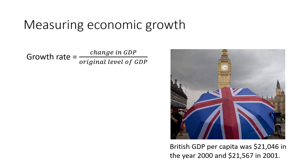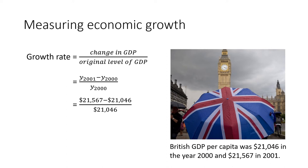Besides measuring income, we'd like to measure economic growth. The growth rate is always just the change in GDP divided by the original level of GDP. For example, if you want to know the growth rate in the year 2000 in terms of British GDP per capita, you take GDP per capita in 2001, subtract what it was in 2000, and divide by the original level in 2000. In this case it would be 21,567 minus 21,046, divided by 21,046, which gives 0.024755 — equal to about 2.5%. To go from a decimal to a percent, you move the decimal point over two spaces. This means in the year 2000, British GDP per capita grew at a rate of about 2.5%.